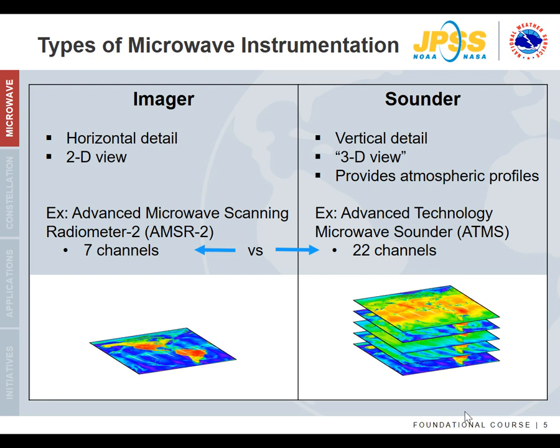The ATMS is the Advanced Technology Microwave Sounder, and the Advanced Microwave Scanning Radiometer is AMSR. The channels are strategically placed to measure properties at various heights in the atmosphere so that the end result is a 3D view.